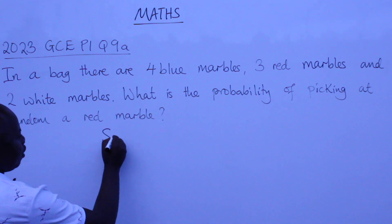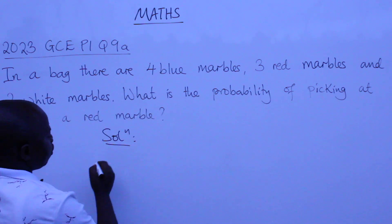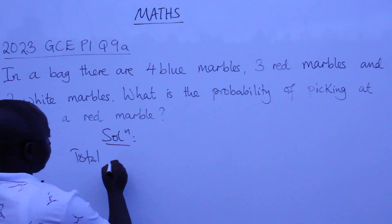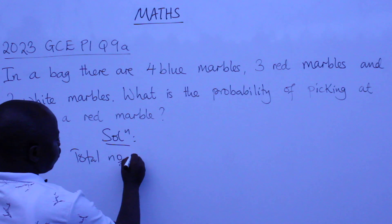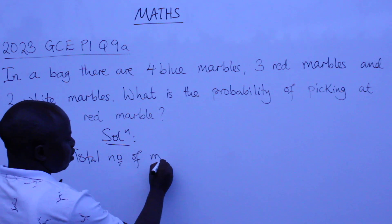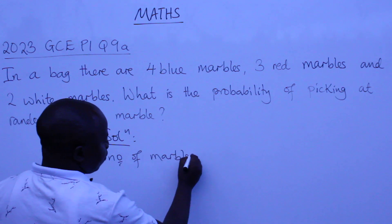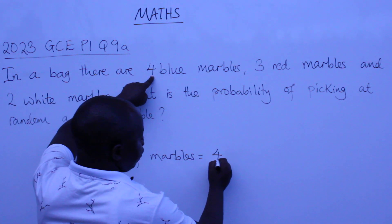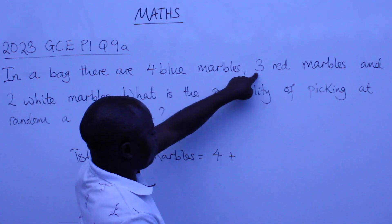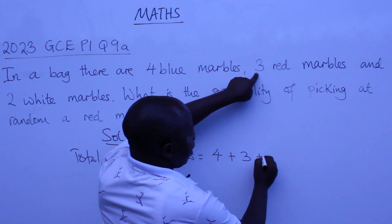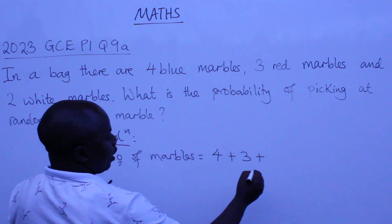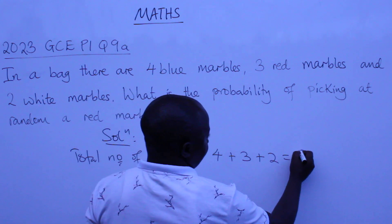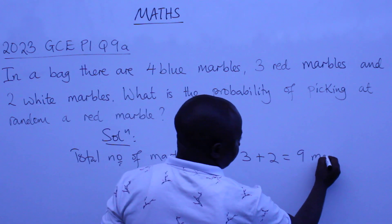So, solution here. The total number of marbles: we have four blue plus three red plus two white, giving us a total of nine. So we have got nine marbles in the bag.